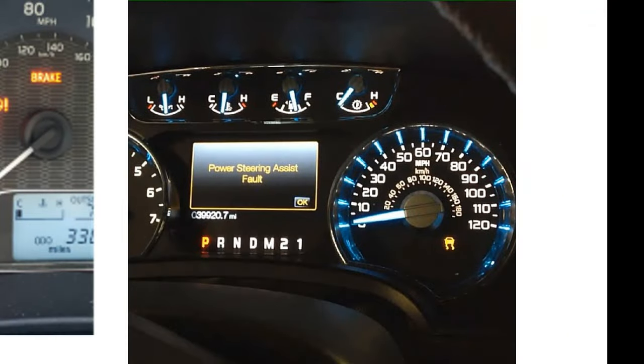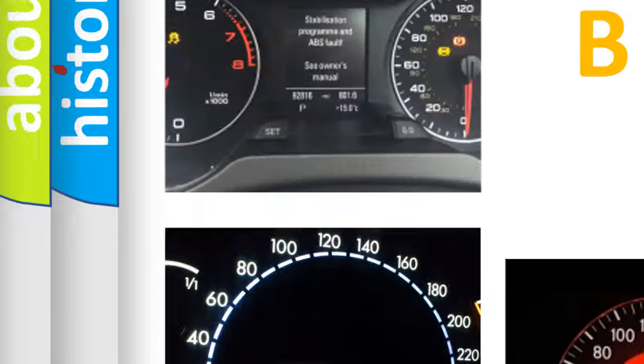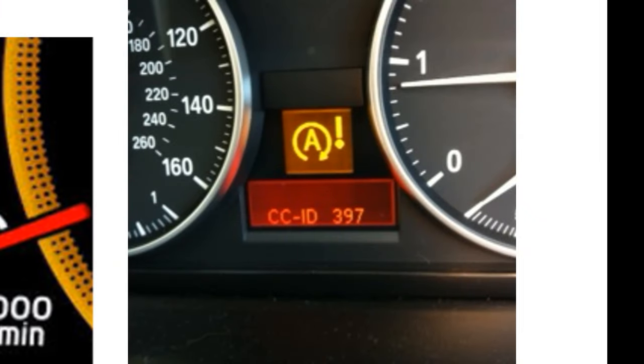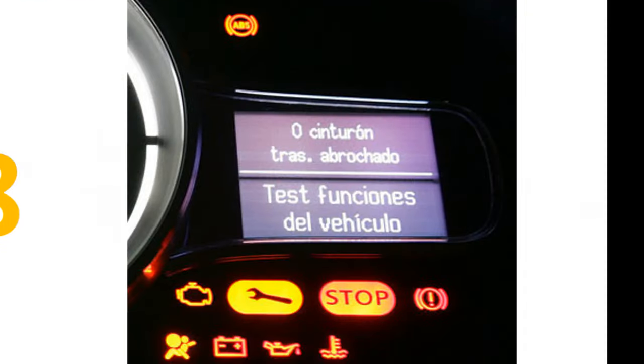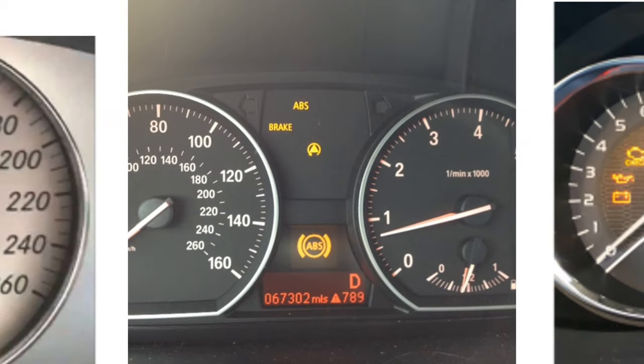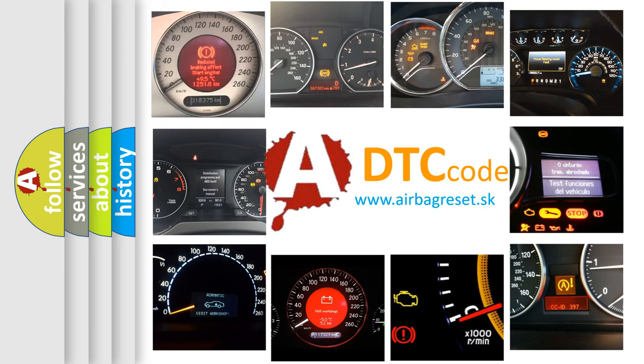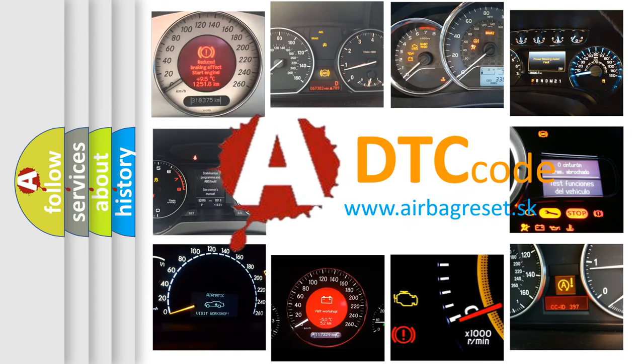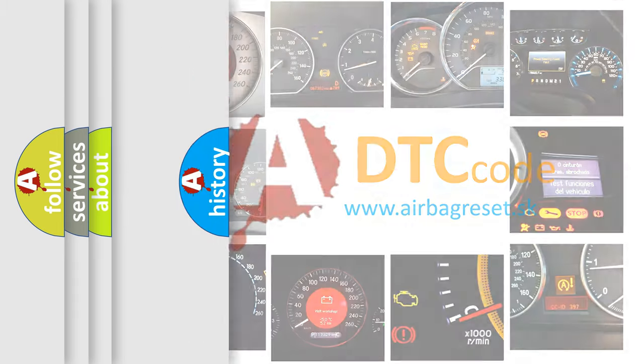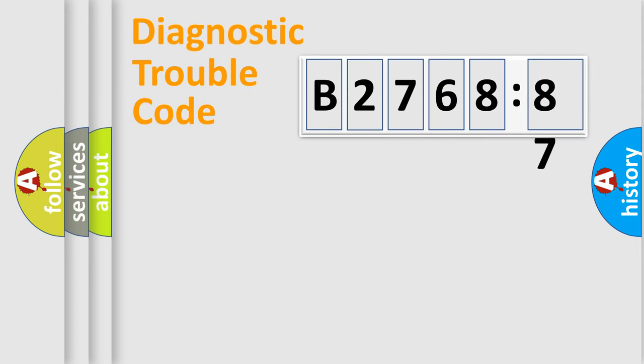Welcome to this video. Are you interested in why your vehicle diagnosis displays B276887? How is the error code interpreted by the vehicle? What does B276887 mean, or how to correct this fault? Today we will find answers to these questions together. Let's do this.